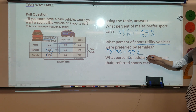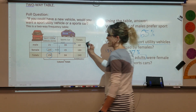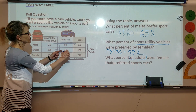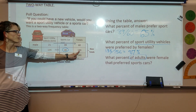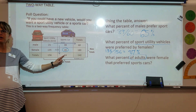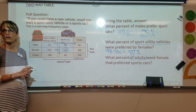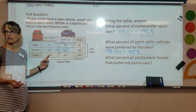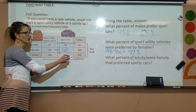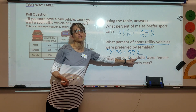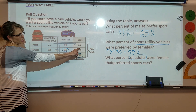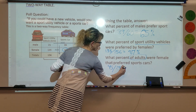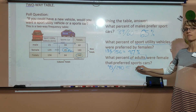Last question: what percent of adults were female and prefer sports cars? Now we're talking about all of the adults — male and female — and we're looking for female sports car voters. What number do I divide by? You divide 45 by 240, because it says 'of all of the adults' — there were 60 males and 180 females for a total of 240 adults. So 45 divided by 240 gives approximately 18 to 19 percent when rounded to the nearest whole percent.